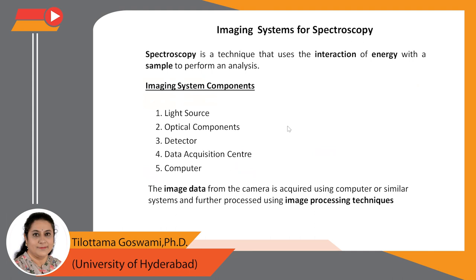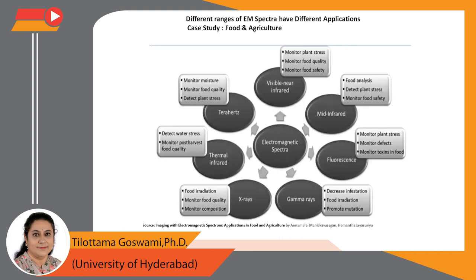Let us see the various tasks for food and agriculture which can be accomplished by imaging at various ranges of the electromagnetic spectrum: visible and near-infrared imaging for monitoring plant stress, mid-infrared for food analysis, thermal infrared for monitoring post-harvest, x-ray imaging for monitoring composition, and gamma ray imaging for assessing soil properties.